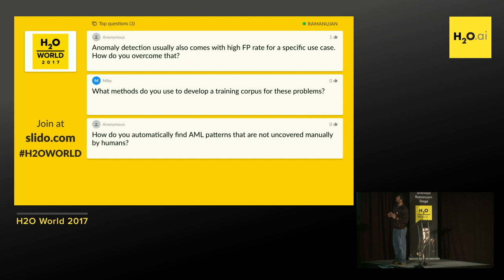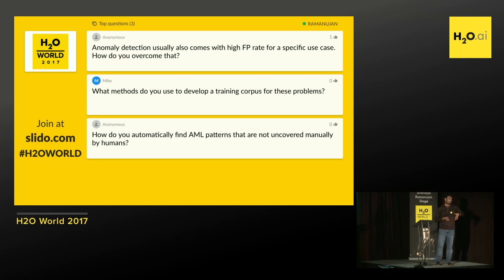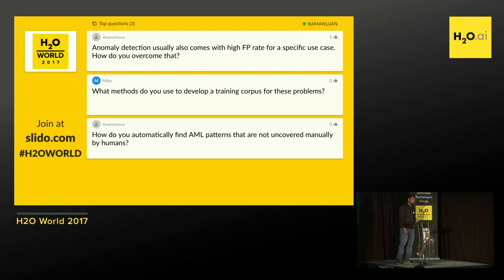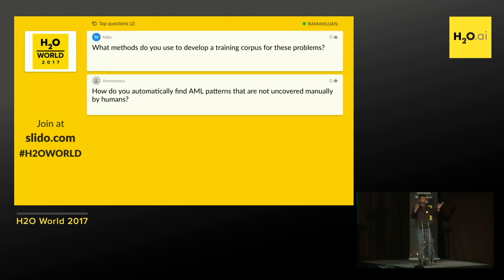Anomaly detection usually comes with a high false positive rate for a specific use case — how do you overcome that? In the first pass, every time you design your algorithm, you penalize it a lot more heavily for detecting false positives than for detecting true positives. It's not just managing an imbalanced data set — you penalize about twice the size of what you would use to balance the data set, to make sure false positives are as low as possible. If you do see a high false positive rate, that's also an opportunity to look at better features, more data, more interactions — you can build features between different features that interact as well.